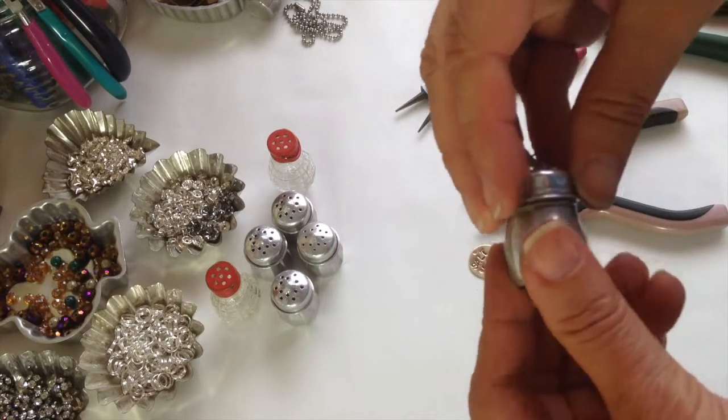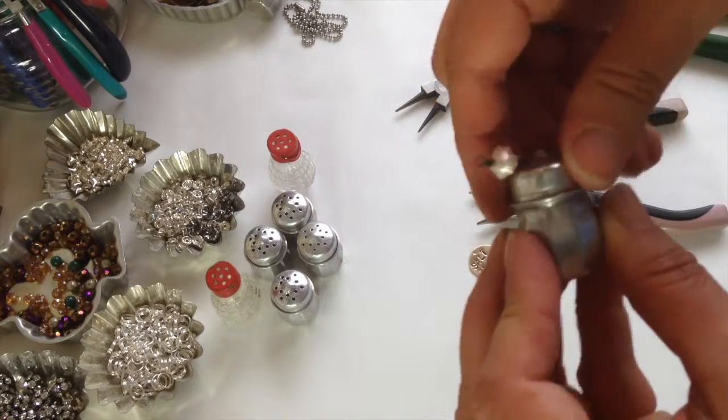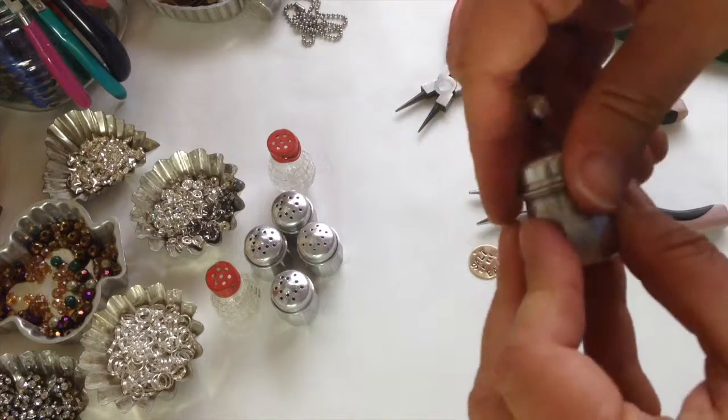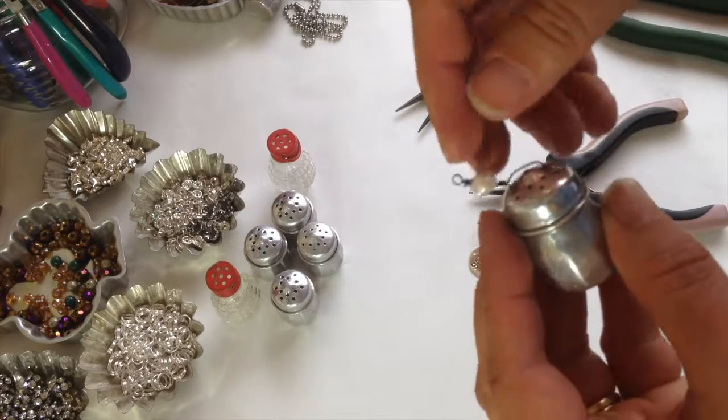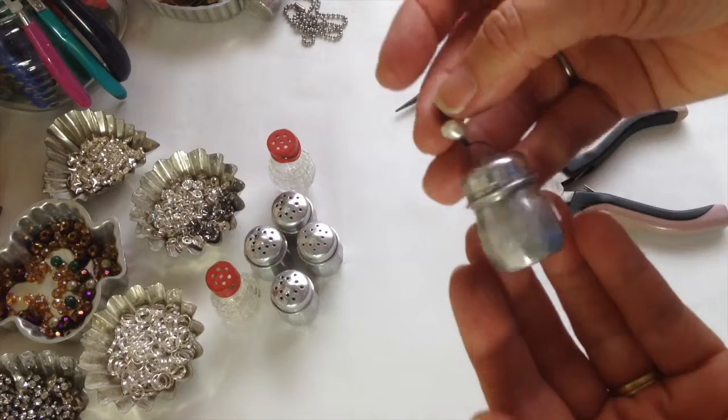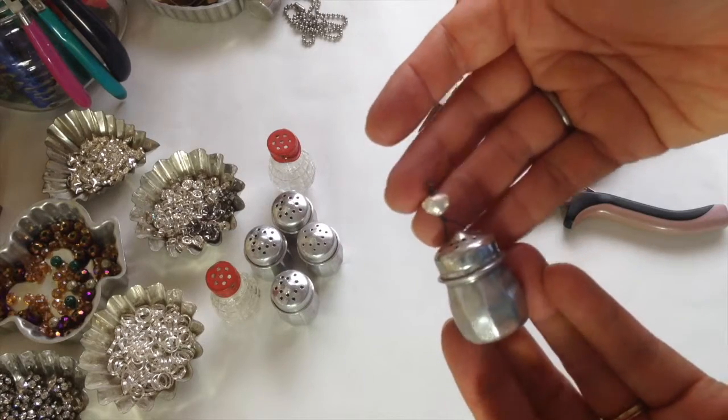And then you just screw the lid back on. You can put a secret message in there, or anything you want. And there you have your vintage salt shaker pendant for your necklace.